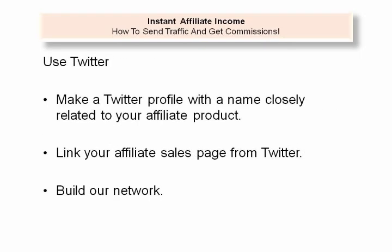Make a Twitter profile with a name closely related to your affiliate product. Link your affiliate sales page from Twitter and build your Twitter network. Spend 10 to 20 minutes on Twitter and follow at least 20 new related people daily. Follow only active Twitter members as they'll commonly follow you back. This way, in a week you can get a lot of followers to your freshly created profile. Now promote your product utilizing Twitter by sending tweets. If you have more related users, chances are better for making sales.